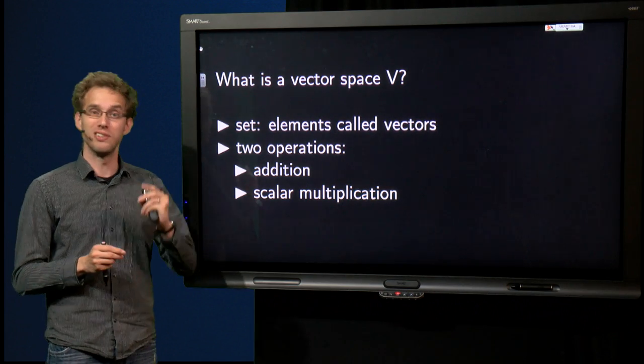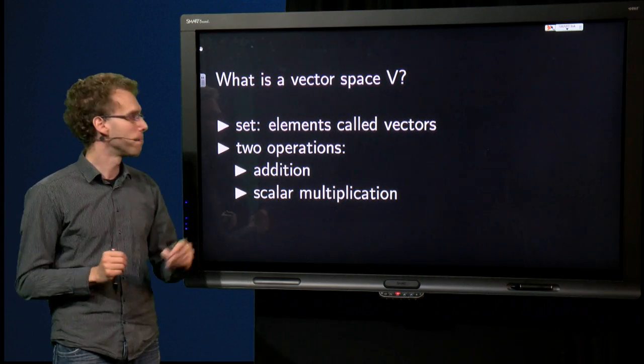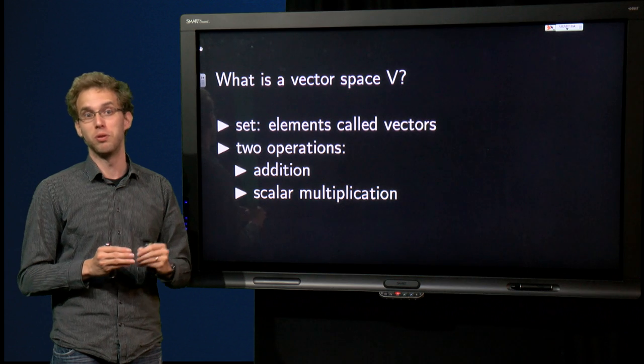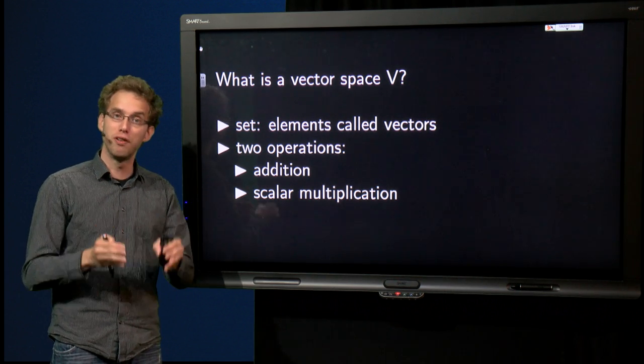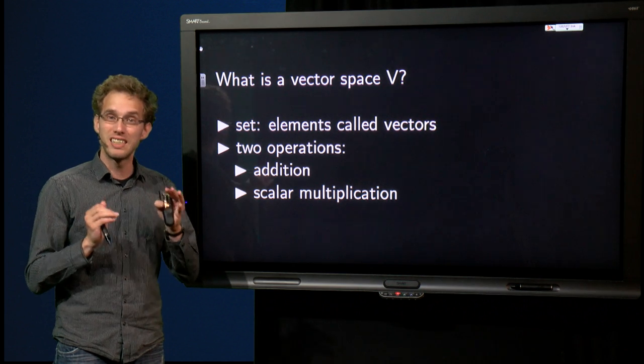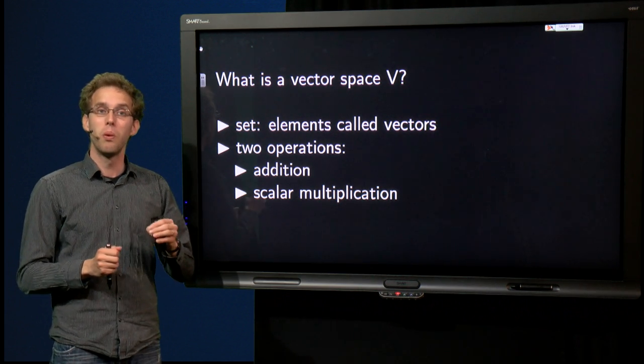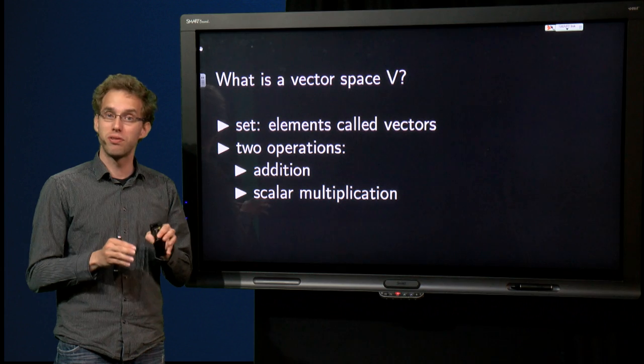You also need to be able to perform two operations. You need to be able to add vectors, so addition, and you need to be able to multiply vectors with a scalar, scalar multiplication. Furthermore, we will need to satisfy ten properties.